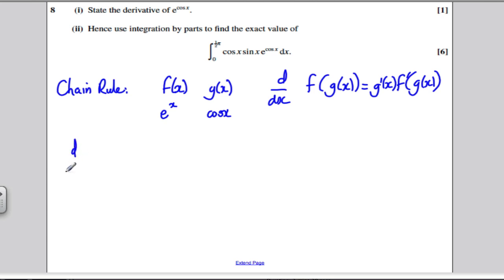If we want to differentiate e to the cos x, we're going to differentiate the g of x, we're going to differentiate cos x, and we're going to get minus sine x. Then we're going to differentiate f of x, which gives me e to the x, but we're going to evaluate it at g of x, so we're just going to get e to the cos x back. So that's the answer to the first part. The derivative of e to the cos x is minus sine x e to the cos x.